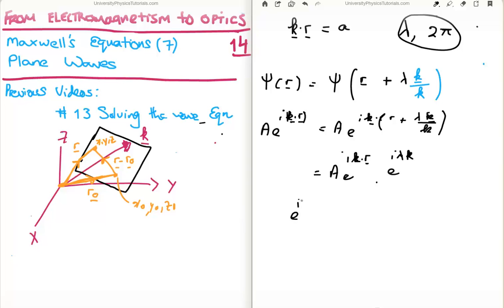Now for this to be true, we must have the following. We must have that e to the i, lambda k, is equal to 1, is equal to e to the i, 2 pi. And therefore, the magnitude of the propagation vector is equal to 2 pi over lambda.